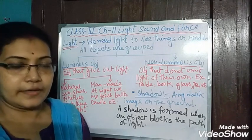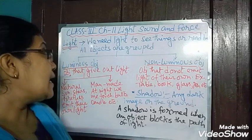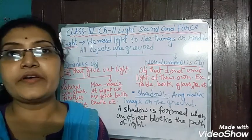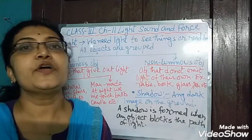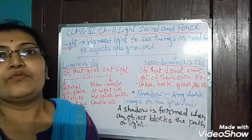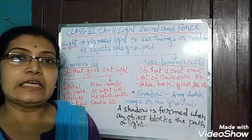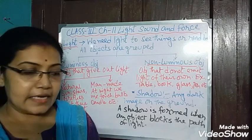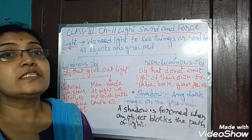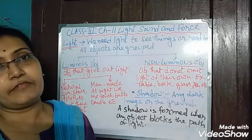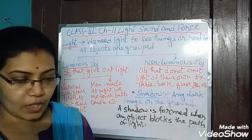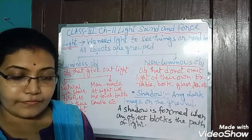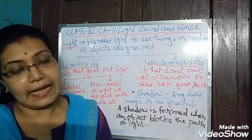So let's start. Light. We need light to see things or read books. As we all know, without light in the dark we cannot see anything. In daytime, the sun is the main source of light and heat. The stars and fireflies also emit light.